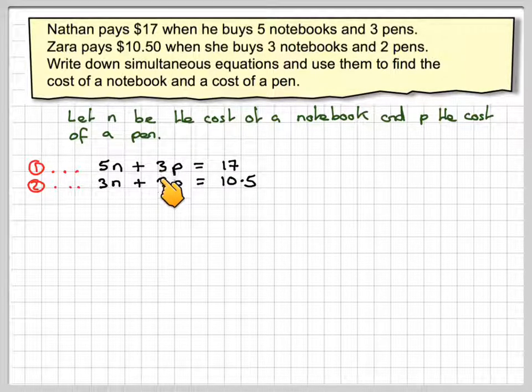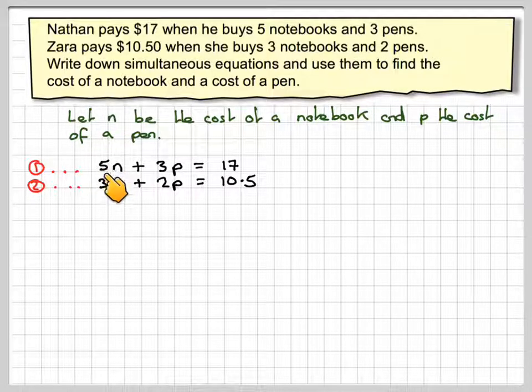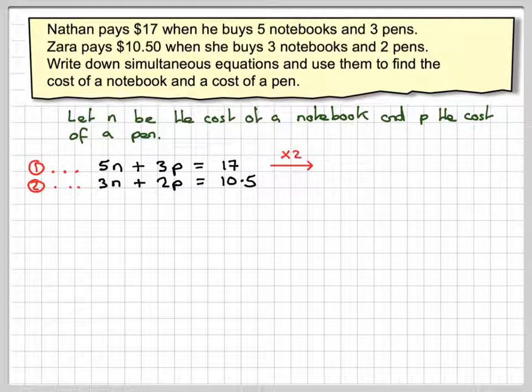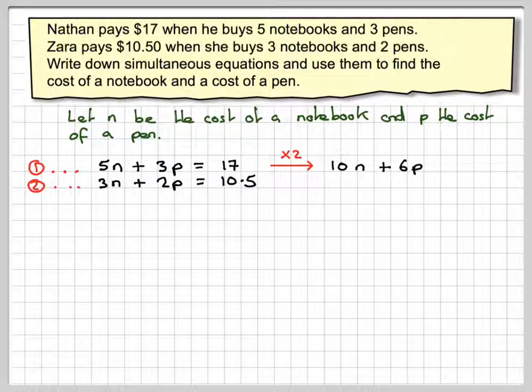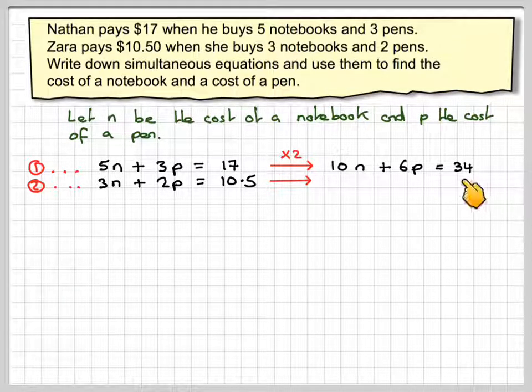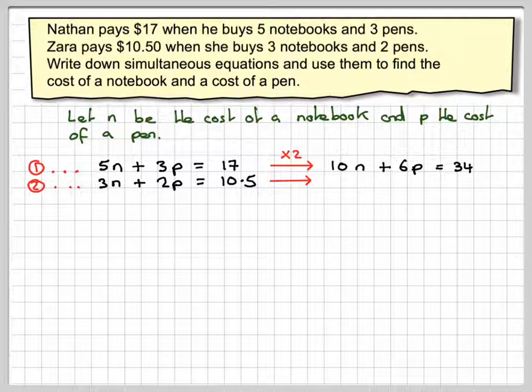Now you either need to make those two the same or these two the same. It's probably easier to make these two the same. So we'll multiply the top one by 2. That gives 10N plus 6P and 2 times 17 is 34. Don't forget the last number as well.